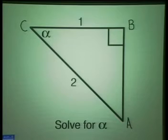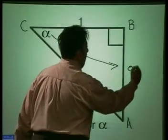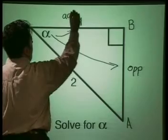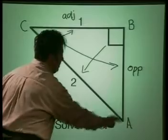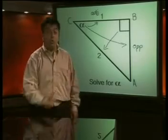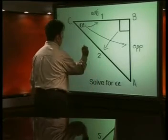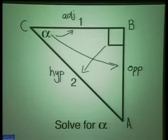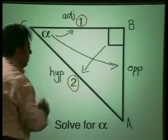Let's have a closer look. Can you see that line AB is opposite angle alpha? And line CB is adjacent to angle alpha, and we have the 90 degree angle opposite to line CA. That line CA is called the hypotenuse. The adjacent side is equal to 1, and the hypotenuse is equal to 2.